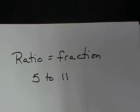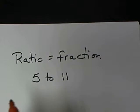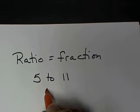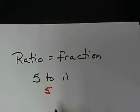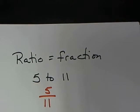A ratio is simply our favorite F word: fraction. It's just written in disguise. A ratio is something that can be written as a fraction, or a ratio of two items. You might see it written as 5 to 11. That ratio of 5 to 11 we want to write as a fraction — the first number is your numerator, the 'to' is your division line, and the second number is your denominator.